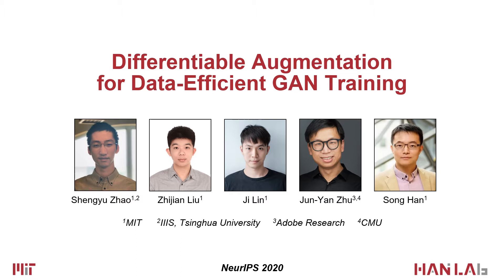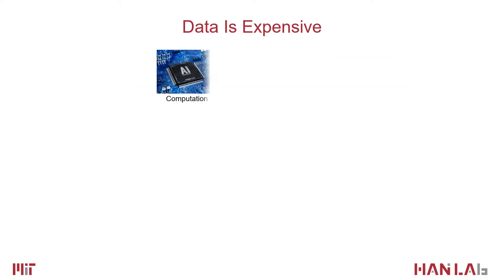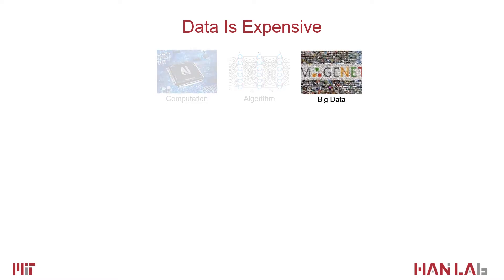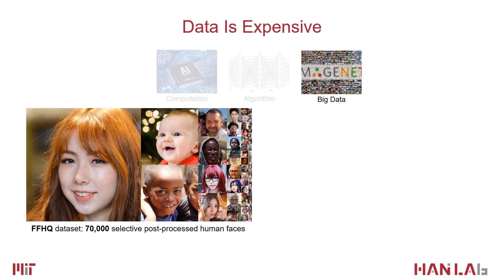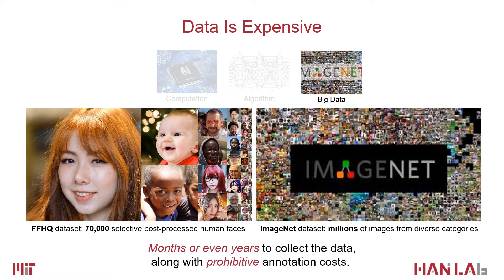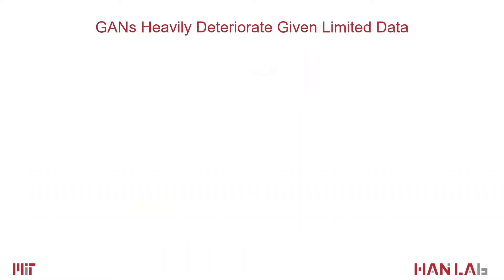Modern deep learning has three main pillars: computation, algorithm, and big data. Data is more expensive. For example, FFHQ and ImageNet are the widely used datasets for GAN training. Collecting such large-scale datasets requires months or even years of considerable human efforts. However, reducing the amount of training data results in drastic degradation in performance.